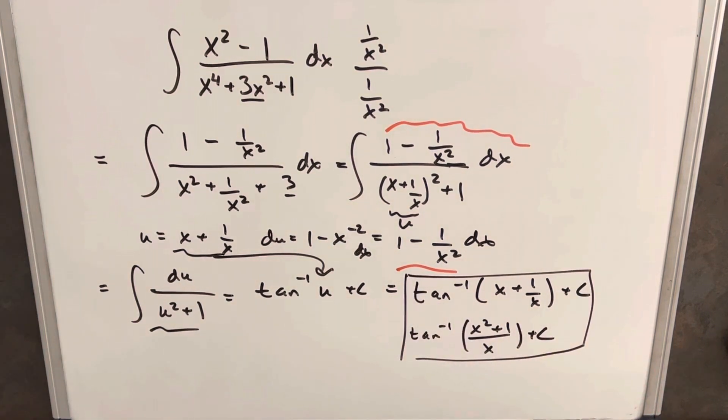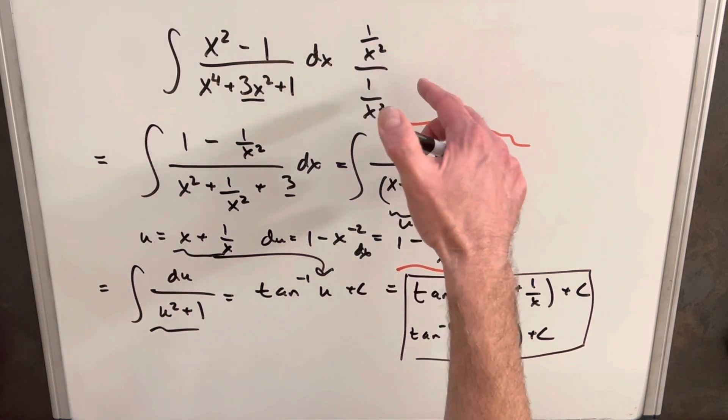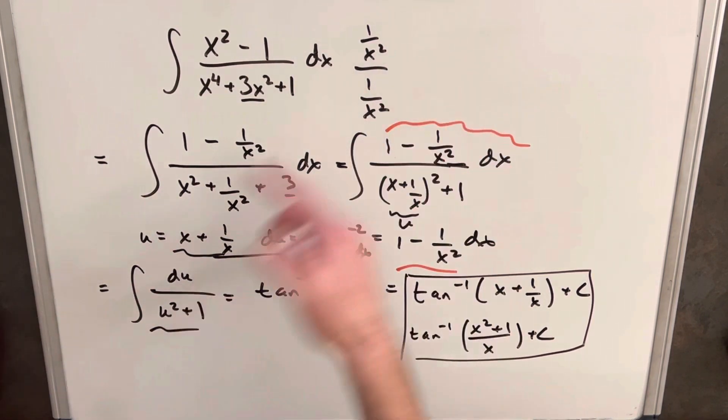So again, I just thought that was interesting that you could just do this one trick to multiply by a 1 over x squared, and it just makes the whole factoring and complete the square business work so much nicer. Again, let me know if you tried a different method or if you were able to find a better way to make this work. Anyway, that's it. Thanks for watching. Please like and subscribe and have a great day.